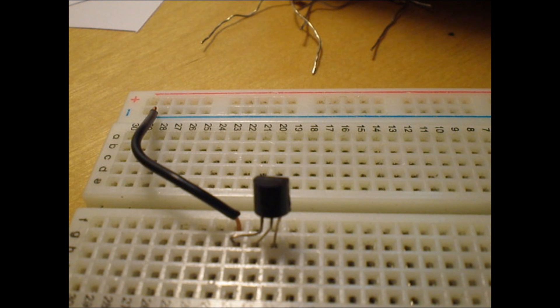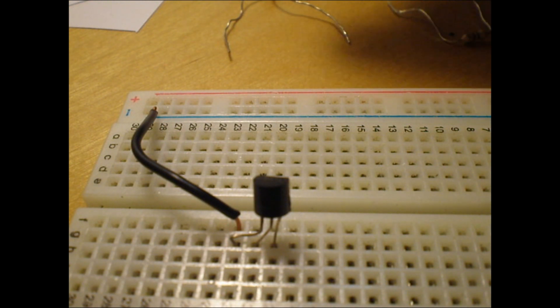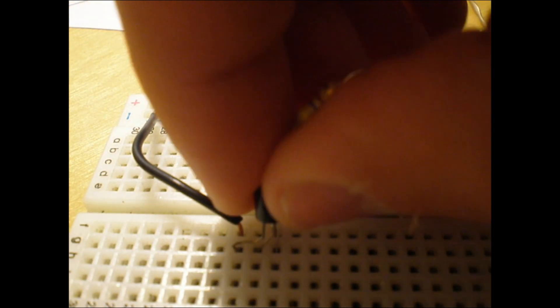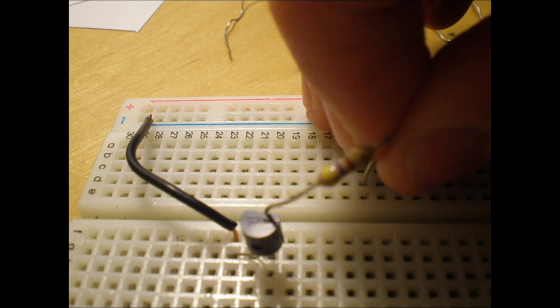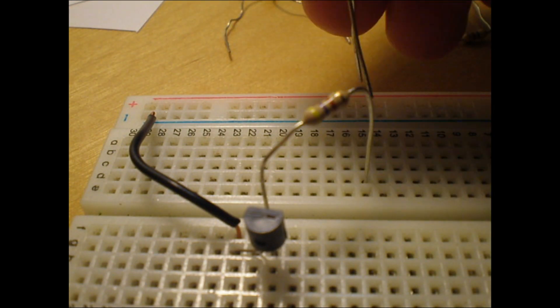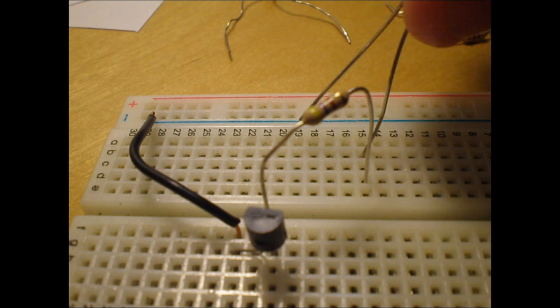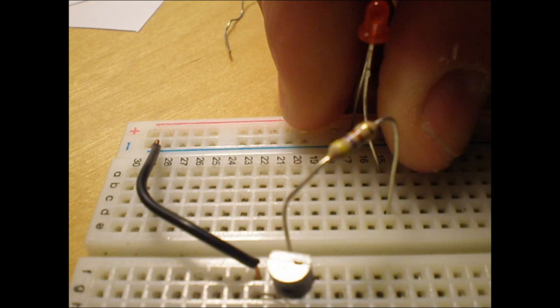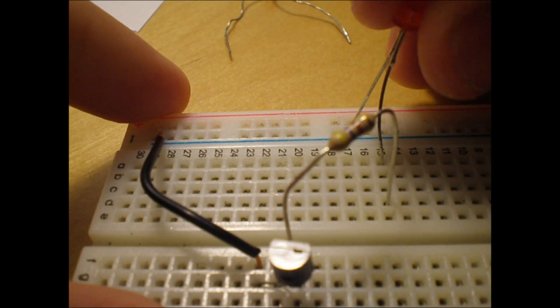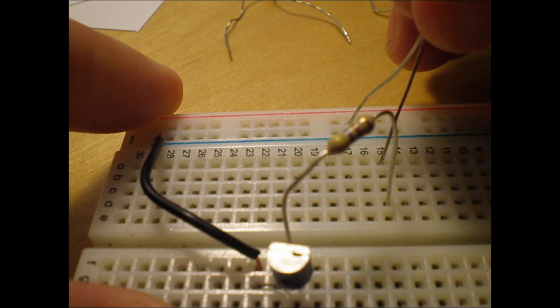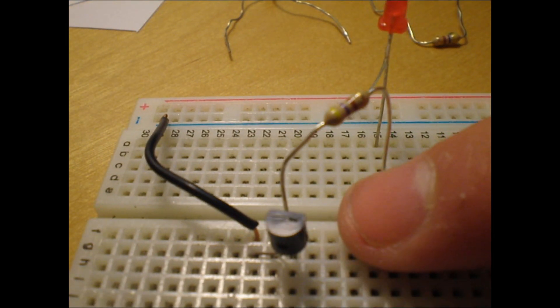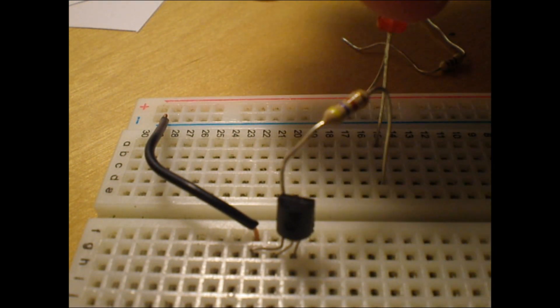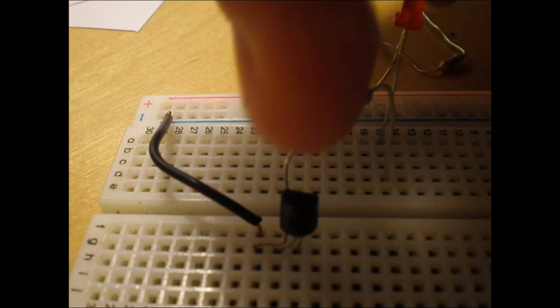The third thing you want to do is take one of your 1K resistors, plug it into your emitter pin on the transistor. Don't plug it into the ground, because we're going to be connecting this to your LED. You want to put the positive pin of the LED into the positive voltage, because this is where the emitter will be giving off negative voltage, so you want your positive pin in the positive voltage.